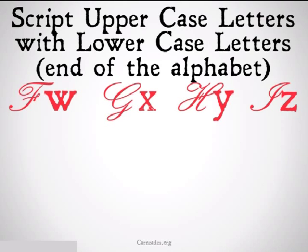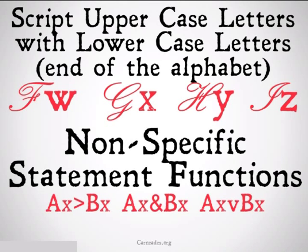You also are going to have script uppercase letters with lowercase letters from the end of the alphabet. So with variables, these are going to be nonspecific statement functions. These are going to be things like Ax implies Bx, Ax and Bx, Ax or Bx. Remember, the script uppercase letter is representing everything that's not the variable, while the variable is just representing itself. If those last two were a little confusing, don't worry about them as much. We're only going to see them when we look at the definitions of the rules of inference, and they should become a lot clearer then.